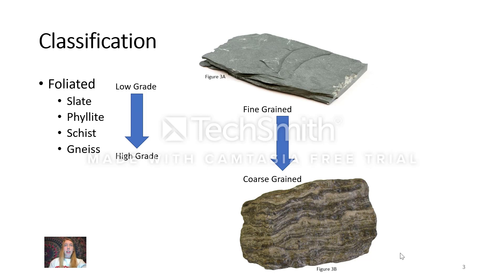Like igneous and sedimentary rocks, metamorphic rocks are classified based on mineral composition and texture. Classifying metamorphic rocks is broken into two main groups: foliated and non-foliated. Beyond this, they can be further classified according to mineral content, parent material, and grain size. Mineral content and grain size vary with the conditions of pressure and temperature that were present in the location when the metamorphism process occurred.